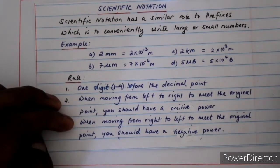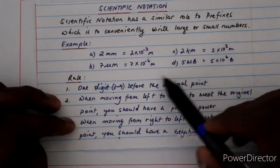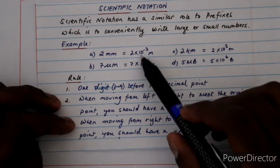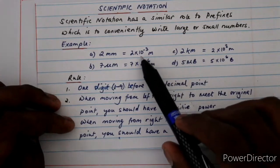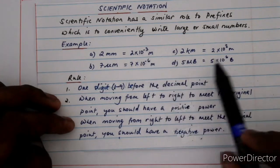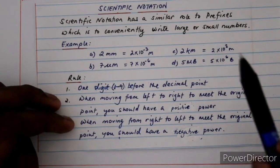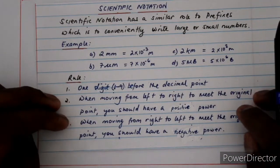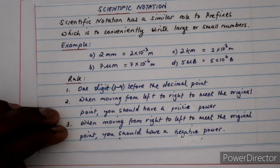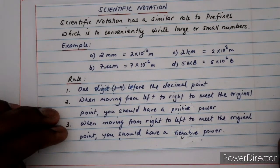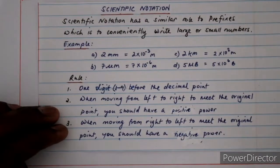That connects prefixes with scientific notation. A very common feature throughout is that we are using base 10. In scientific notation, you'll always be dealing with base 10 and powers of 10. Now let's look at some examples and see how we actually write numbers in scientific notation.